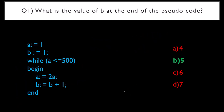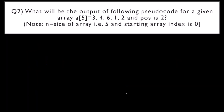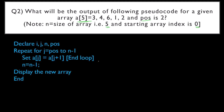Let us go to the second question. What will be the output of the following pseudocode for a given array a of 5 elements: 3, 4, 6, 1, 2, and pos = 2? Note: n equals the size of the array, which is 5. The starting array index is 0 — only in this pseudocode they have mentioned that, so we take it from 0.